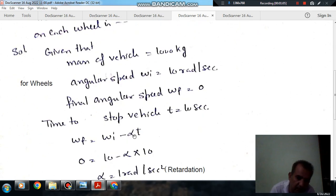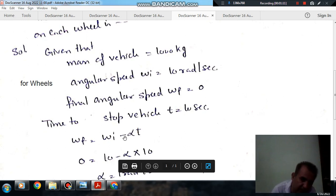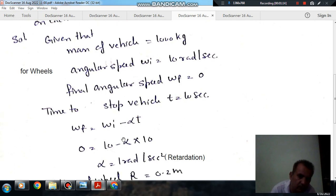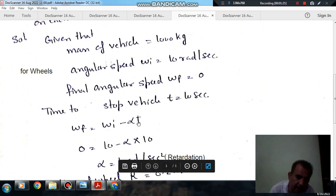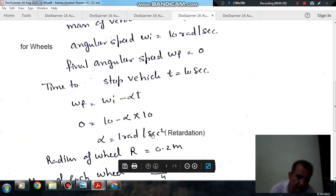So, as there is angular retardation, suppose alpha is the retardation. As alpha is retardation, we are taking a minus sign and taking the value of alpha as positive. So, the formula is omega_f equals omega_i minus alpha t. Since omega_i is 10 and time is 10, alpha comes out as 1 radian per second squared. So that is the retardation.